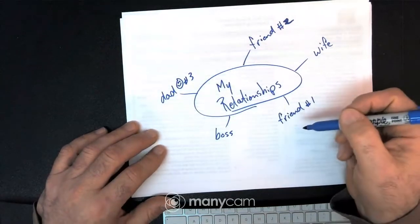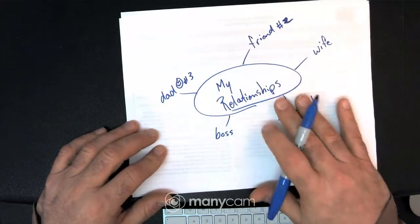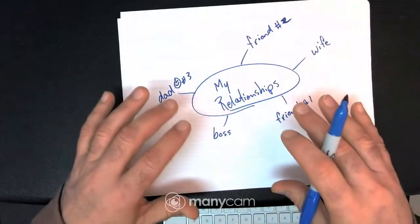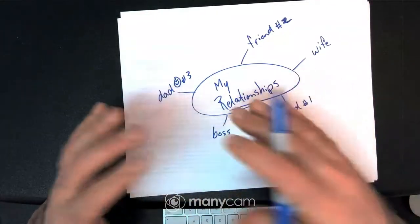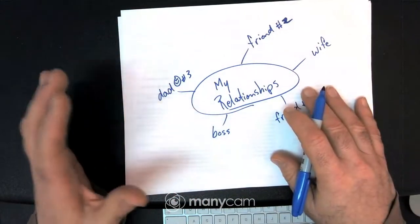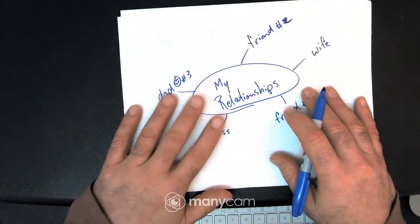Before we actually get started on the assignment, you'll notice that I'm going very low tech. So I'm just using a pen and a piece of paper. That's to show that you can do these assignments without using something high tech. You don't have to use Word Online or anything like that if you don't like to, or you don't want to, or you think it'll be better this way.